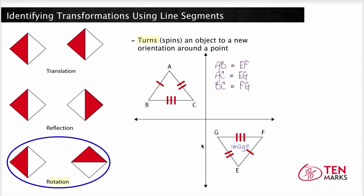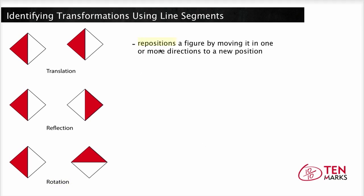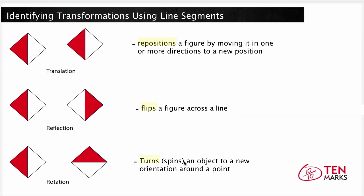To recap: a translation changes only the position — the left side is congruent to the left side, the right side to the right side, the top to the top, and so on. A reflection flips a figure across a line, changing position and orientation of either the top and bottom sides if the change is horizontal, or the left and right sides if the change is vertical. In rotations, position and orientation both change; corresponding sides are congruent but it depends on the rotation as to which sides correspond. Rotations spin an object to a new orientation around a point.